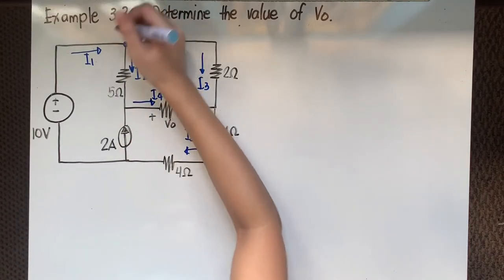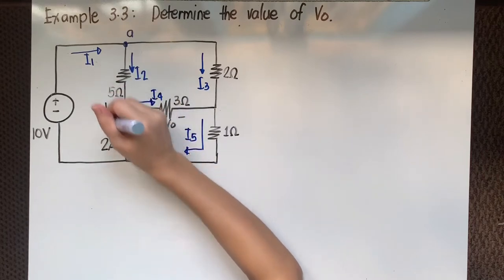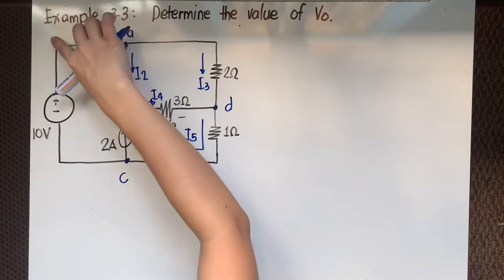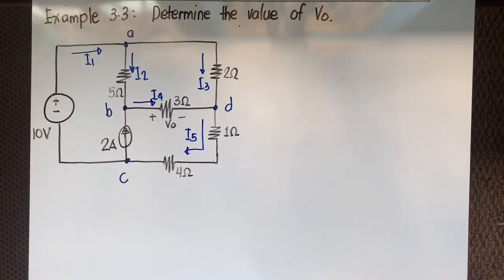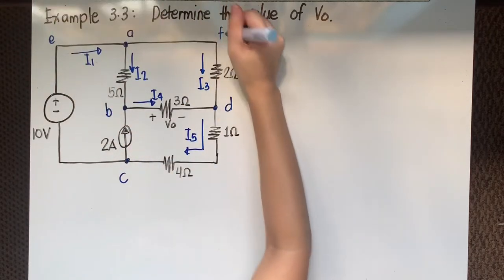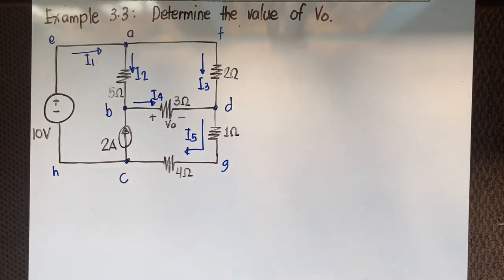Next, let's identify the nodes. We have node A, node B, node C, and node D. We'll also name the corners for use in KVL tracing: E, F, G, and H.